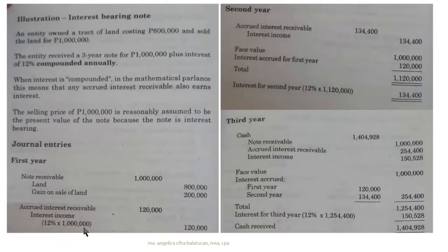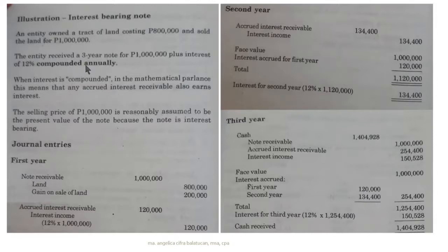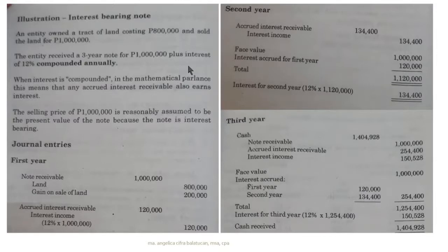For year one interest: 1,000,000 principal × 12% = 120,000. The entry is debit Accrued Interest Receivable 120,000. It is accrued because it has not yet been collected — no payment or collection was stated in the problem. Credit Interest Income 120,000, meaning you have already earned one year's interest.